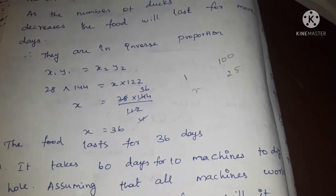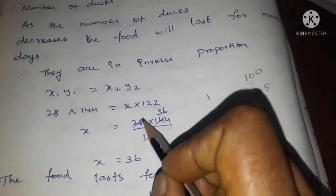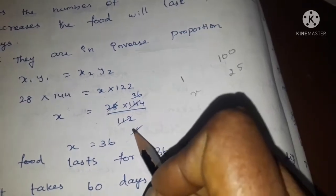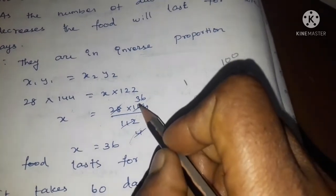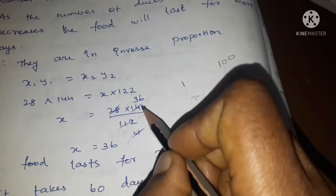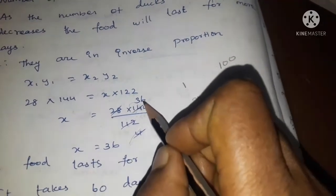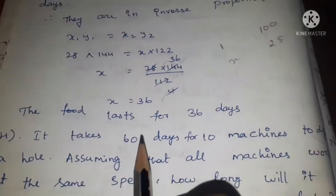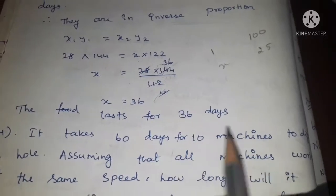Simplifying: 144 divided by 112. Factor: 3 and 12, 4 and 12. Remaining: 28 into 144 by 112 simplifies. x equals 36. So the food lasts for 36 days.